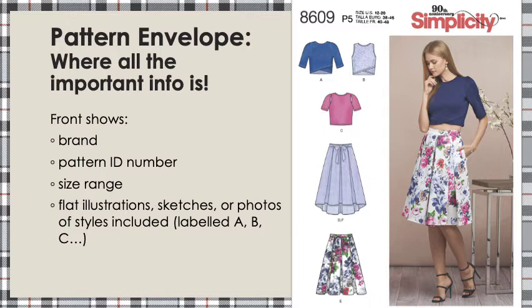The other thing you'll find on the pattern envelope is the ID number of the pattern. Because these companies create so many different patterns, they have to have a way of organizing it all, including the pattern and all of the pieces inside of it. So everything inside the pattern and the pattern envelope will include the pattern ID number. In this case, look at the top left — our ID number is 8609, which means if you type Simplicity 8609 into Google, you should be able to find this pattern. The ID number basically is used to identify what kind of pattern you have.